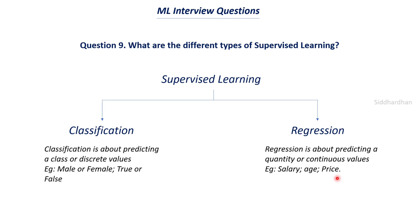Regression is where we try to predict a quantity or continuous value like salary, age, or price. I explained the salary example where we predict a person's salary given their years of experience — we are trying to find an accurate continuous value, which is regression. Another example: if we want to predict whether a person gets a job or not, that is classification because it is a yes/no question. But if we want to predict what salary the person will get, that is regression because we are predicting a value. These are the two different types of supervised learning.